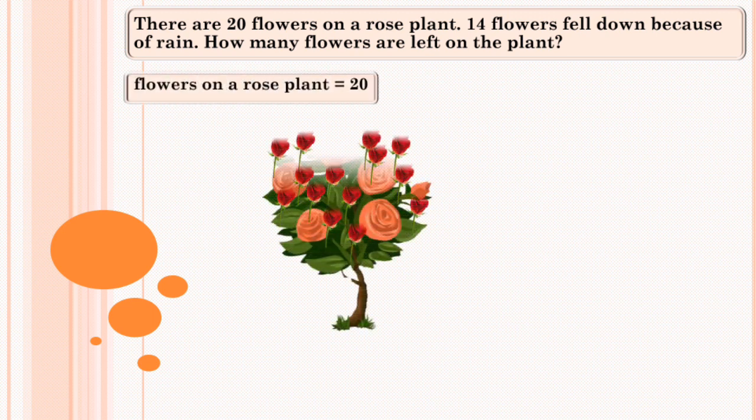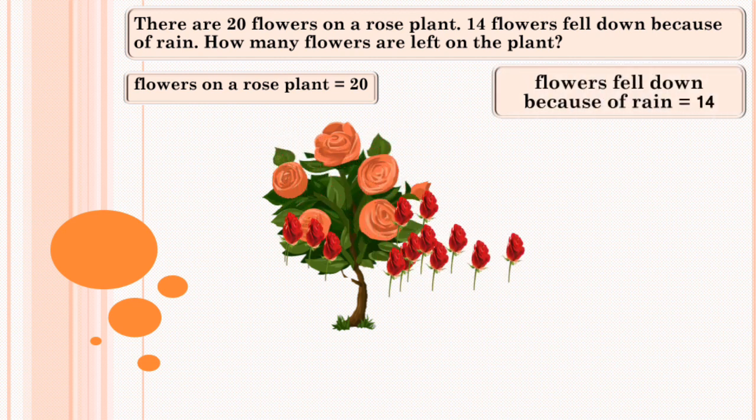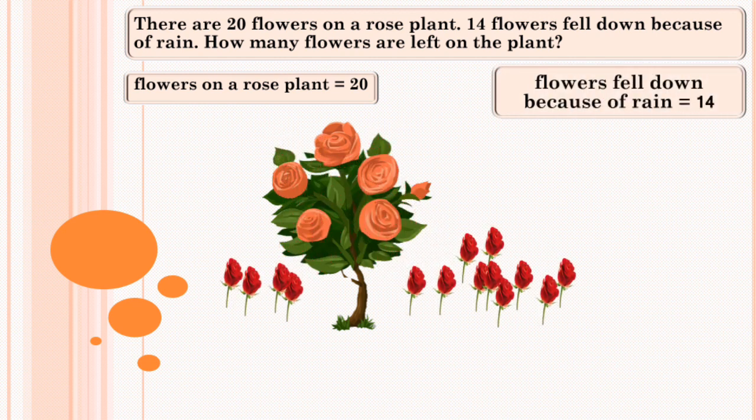Flowers on a rose plant equals 20. Flowers fell down equals 14. When it rains, the flowers fall down and we know the number of flowers on the plant becomes less. So when the number becomes less, there is subtraction.